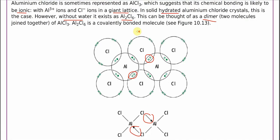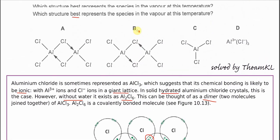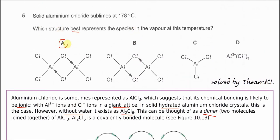Therefore, the answer is A. Without water, normally the structure that can best represent aluminum chloride is Al2Cl6, and the dative bonds are here.